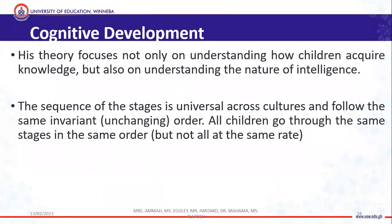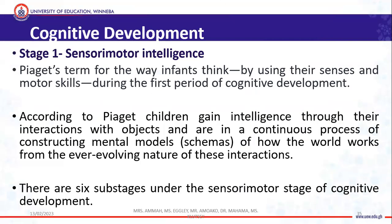Piaget's theory focuses not only on how children acquire knowledge, but also the nature of their intelligence. He calls the first stage the sensorimotor stage, where children have sensorimotor intelligence. Piaget says that the sequence of stages is universal across cultures and follows the same unchanging order — whether a child is born in Africa, Ghana, South Africa, Kenya, the US, Asia, or Japan, every child goes through these four stages, though the rate may vary from one child to another.